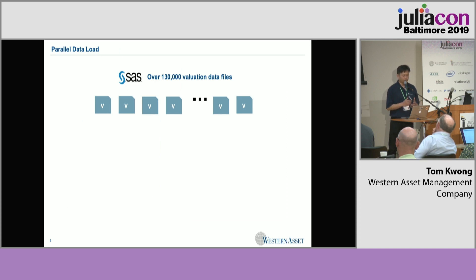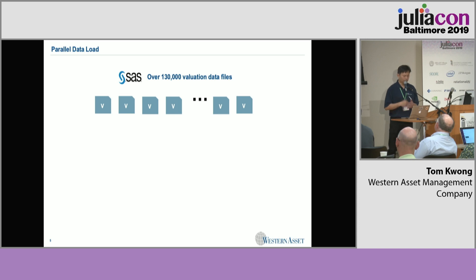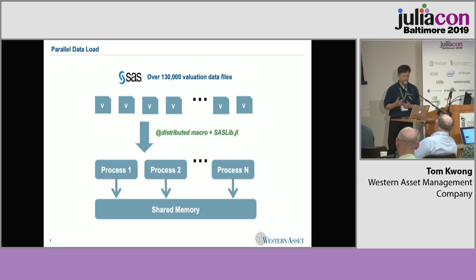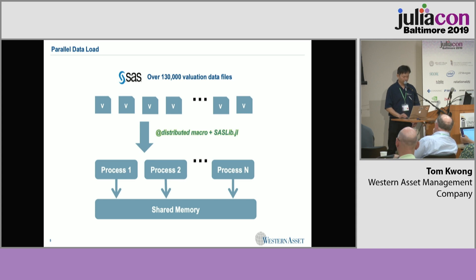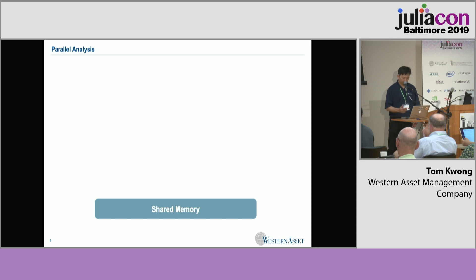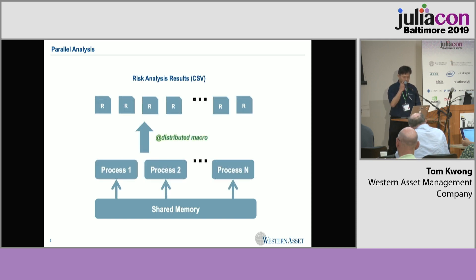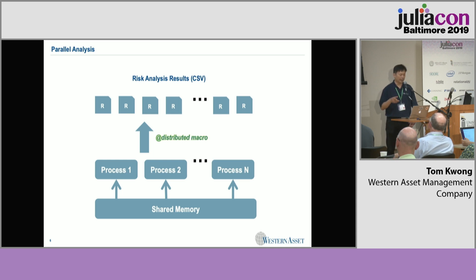From an upstream process, we have these 130,000 files that came from a system written in SAS. We take these files and load them into a shared memory region using the distributed macro. We use an open source library called saslib.jl, which is also my package. Once the data is in shared memory, we can use the same trick — we do all these risk statistics, calculate all the returns and portfolio risk data, and save them back as CSV files. Everything is really, really fast.